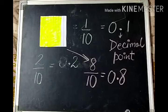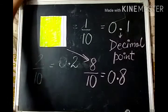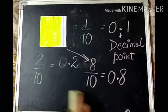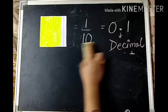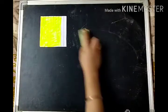So a decimal is a number that separates the whole total from the part.